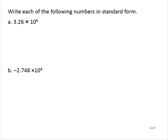So 10 to the sixth power means six factors of 10 multiplied together. And so if we multiply that out, we would have 3.26 times—and 10 to the sixth power is a one with six zeros after it.